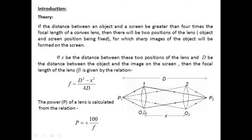Now, if x is the distance between these two positions of the lens — that is the first position O1 and the second position O2 — and capital D is the distance between object pin P1 and image pin P2, then the focal length of the lens is given by: f = (D² − x²) / 4D. By evaluating the focal length f, we can easily determine the power P of the lens using the formula P = +100/f, where the positive sign represents that we are using a converging lens.